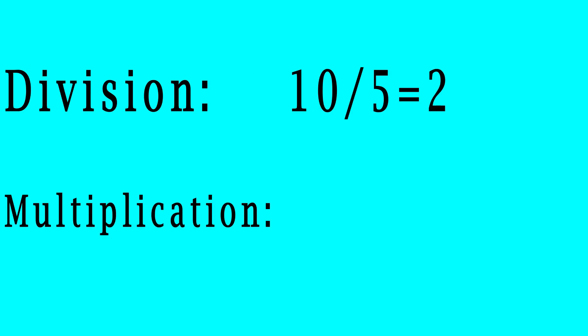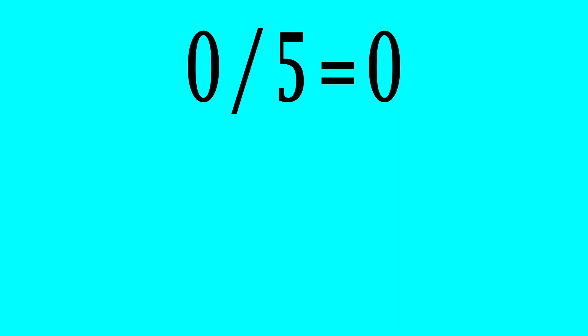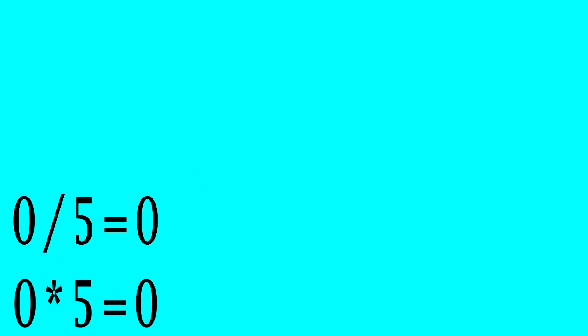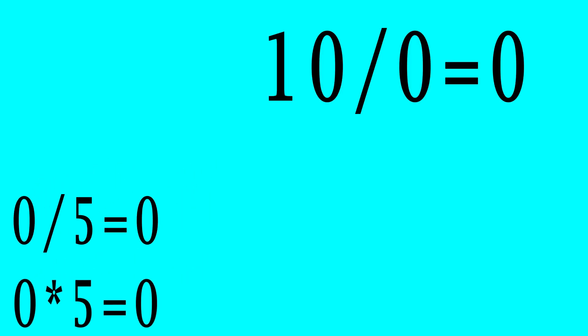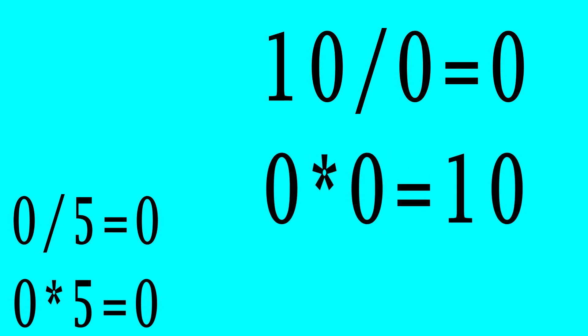The reason that this happens is that division is just the inverse of multiplication. We simply flip the equation around and swap the equal sign with the function. 0 divided by 5 equals 0 when inversed is 0 times 5 equals 0. That's perfectly fine. 0 plates, 5 cherries on each, gives us a total of 0 cherries. 10 divided by 0 equals 0, inversed, says that 0 times 0 equals 10.